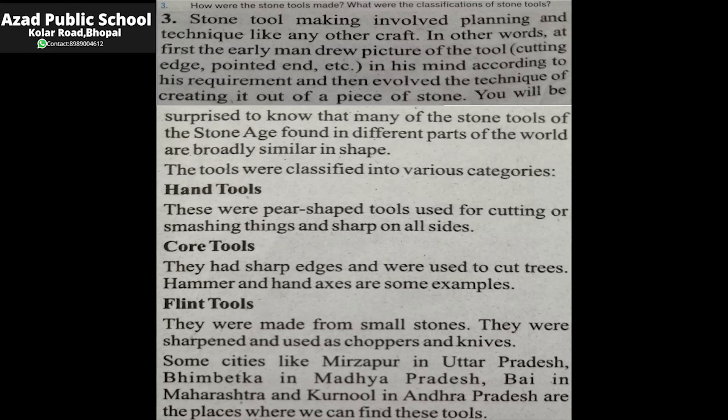Core tools had sharp edges and were used to cut trees — pedon ko kaatne ke istamal hote the. Hammer and hand axes are some examples. Flint tools were made from small stones — chhote pattharon se bante the. They were sharpened and used as choppers or knives.